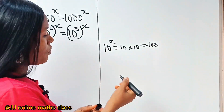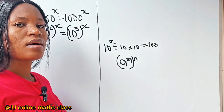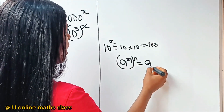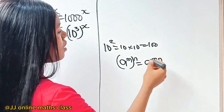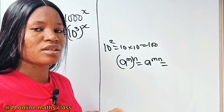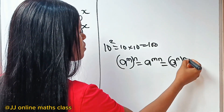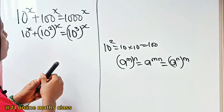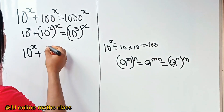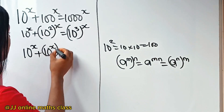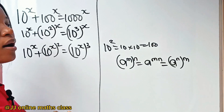Recall that a to the power of m to the power of n — this is a law of indices — is the same thing as a to the power of mn, that is m times n. And if that is the case, that means we can interchange the exponents without changing the value. So we can write this as a to the power of n to the power of m. So let's apply that here: this becomes 10 to the power of x plus 10 to the power of x raised to the power of 2, is equal to 10 to the power of x raised to the power of 3.